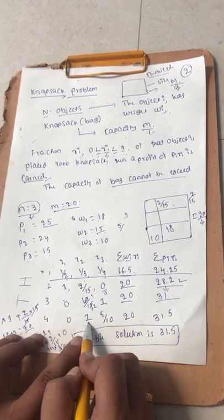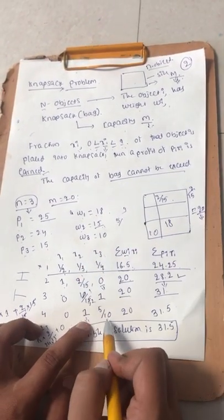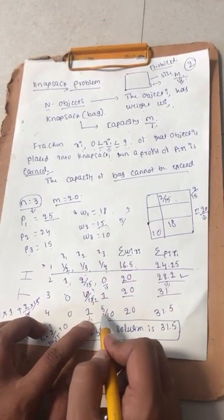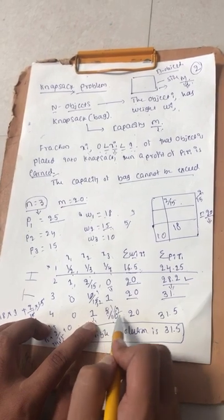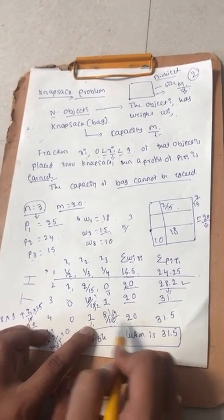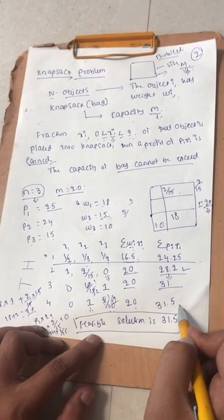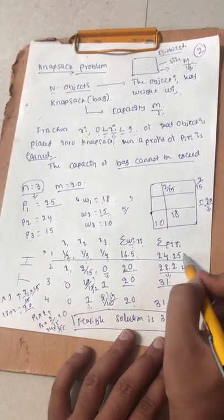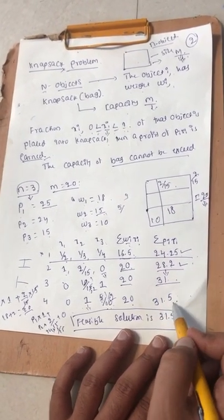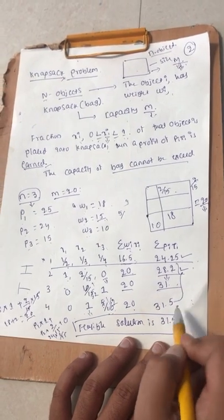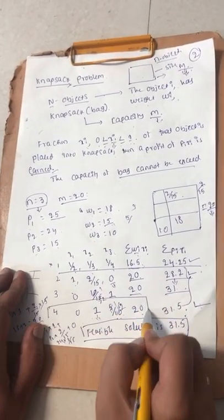In the fourth subset, I take the full weight of object 2, which is 15. The remaining capacity is 5. Among object 3's weight of 10, I take 5/10 which is 1/2, meaning half the weight. If we calculate w_i times x_i we get 20. The profit for this subset is 31.5. Among all four profits — 24.25, 22.2, 31, and 31.5 — the maximum is 31.5.